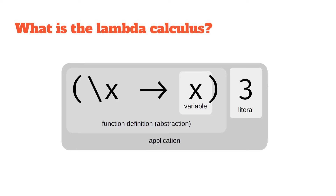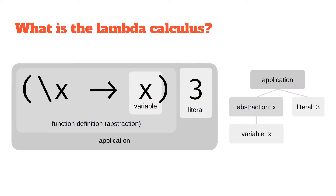Any lambda expression can be built into a tree. At the top we've got our application — the same as our expression on the left — then we've got our abstraction (the function definition), our variable which is the function body, and on the right hand side we've got our literal three.